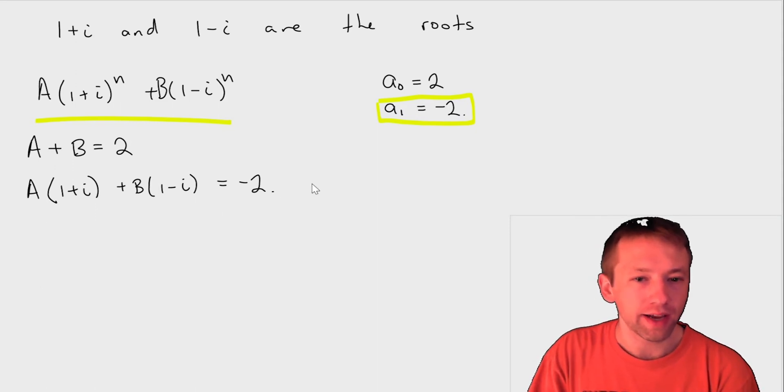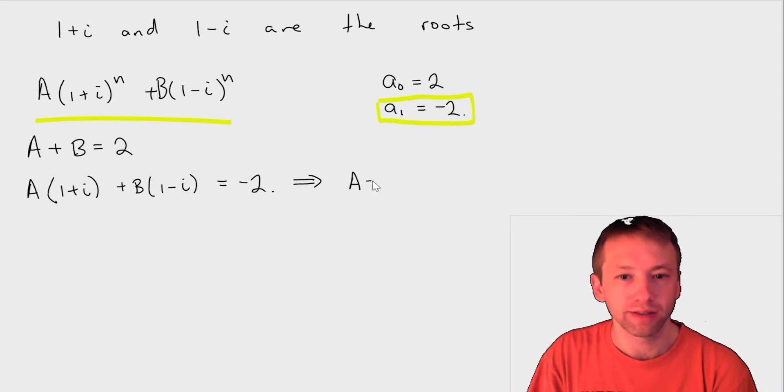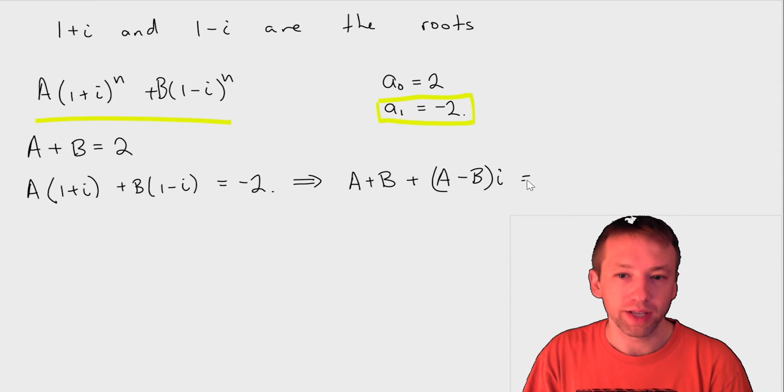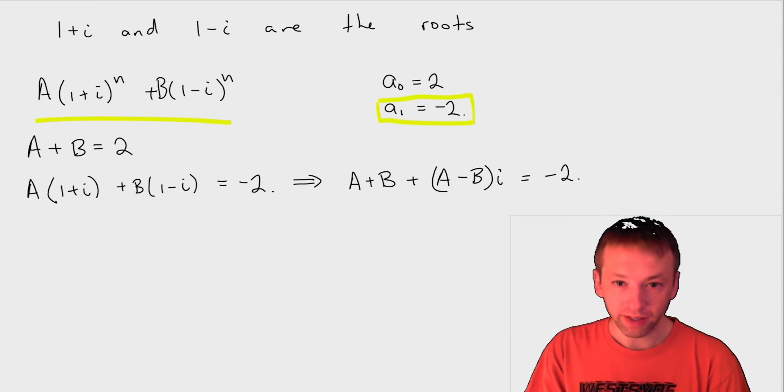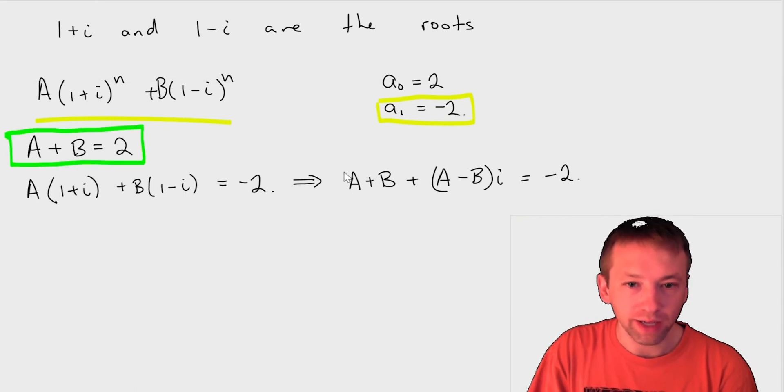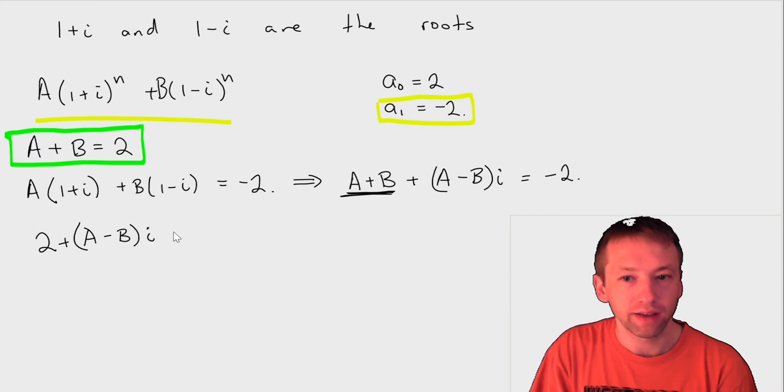If I take this second equation, I can write it as A + B + Ai and then minus Bi. So that's the same as A - B times i. And that's supposed to equal -2. Now here's the thing. I know that A + B is 2 by my first equation. So I can actually plug that into my second equation. So what I get is that, so I plug in my A + B is 2. My second equation becomes 2 + (A - B)i equals -2. Or in other words, (A - B)i is equal to -4.